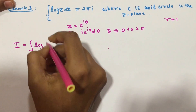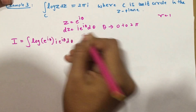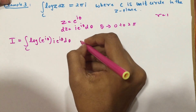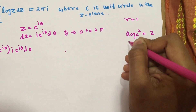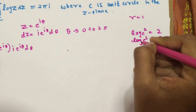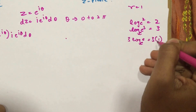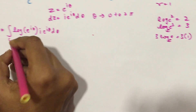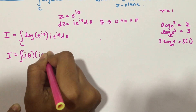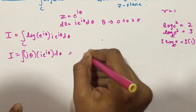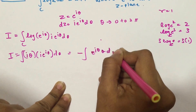I substitute Log(z): since z = e^(iθ), Log(e^(iθ)) = iθ, because log of a number with the same base is always 1. So the integral becomes ∫iθ · i·e^(iθ)·dθ = −∫e^(iθ)·θ·dθ from 0 to 2π, because i² = −1.